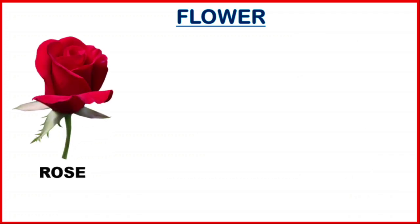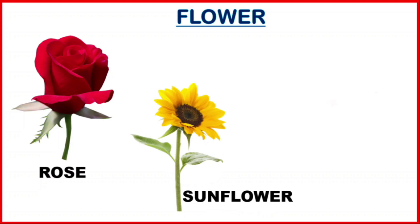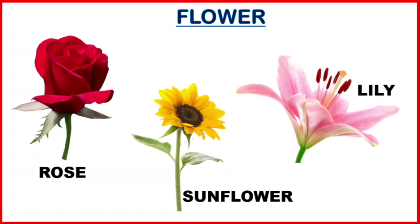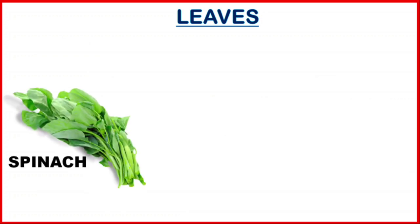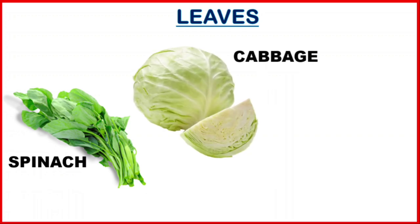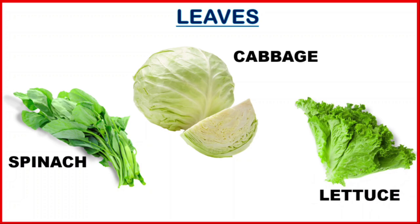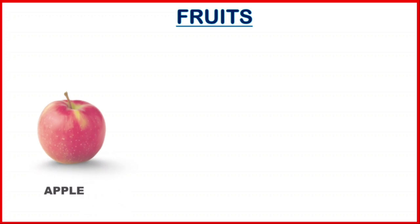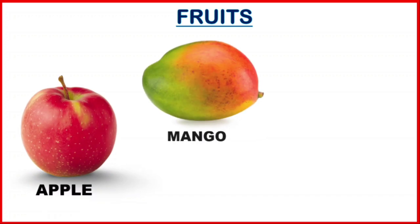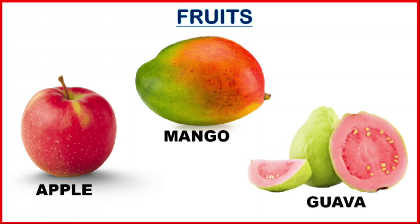Next is flower: rose, sunflower, lily — these are the examples of flowers. Then come leaves: spinach, cabbage, lily — these are examples of leaves. Then come fruits: apple, mango, guava — these are the examples of fruits.